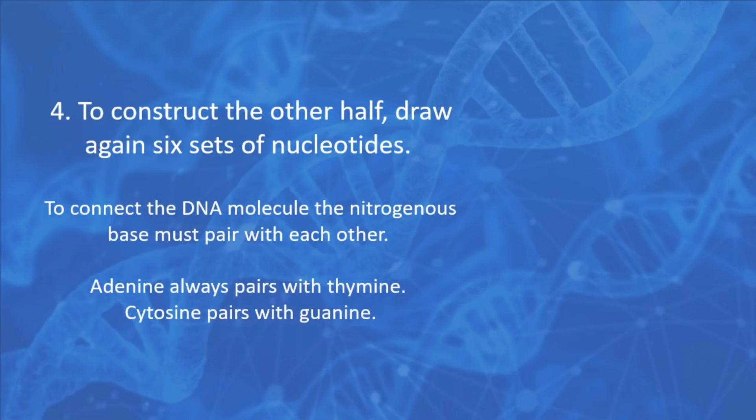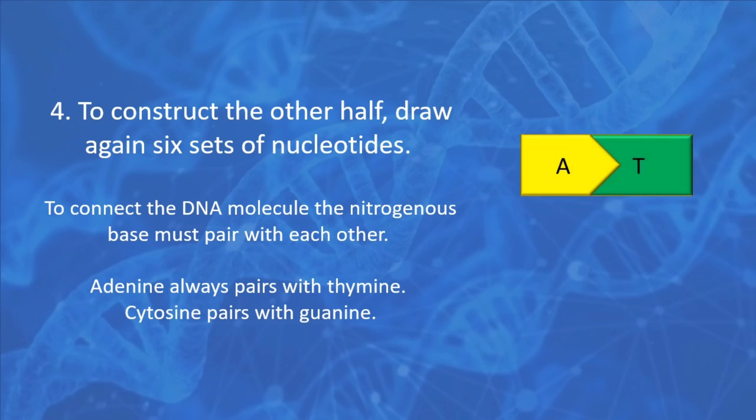Now, to complete your DNA model, you need to construct the other half. You need to draw again the six sets of nucleotides. To connect the DNA molecule, the nitrogenous bases must be paired with each other: adenine must always be paired with thymine, and cytosine must be paired with guanine.